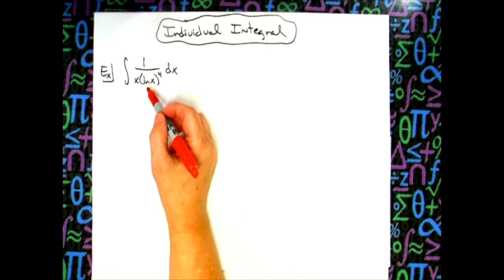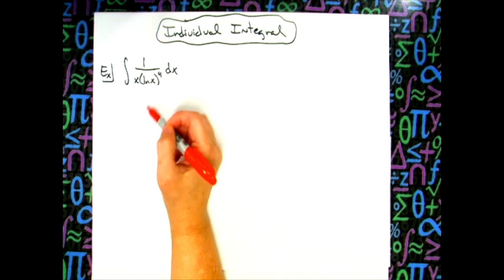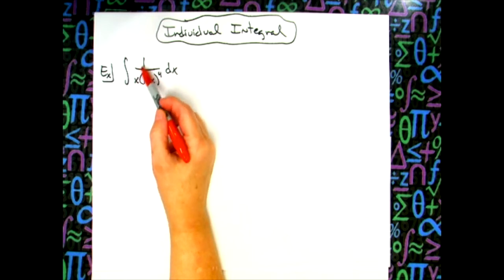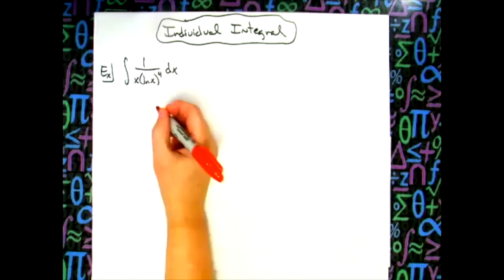Well, when I take the derivative of a natural log of x, I get a 1 over x. And then if you can see, you've got a 1 over x right here. So things are going to cross out really nicely if we do that.